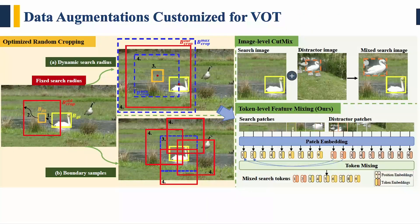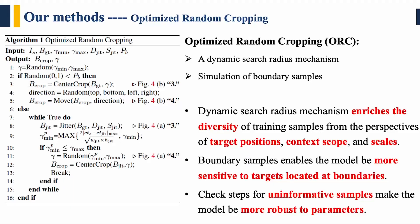In terms of the challenges and model characteristics of SOTA transformer trackers, we customized two data augmentations: an optimized random cropping (ORC) and a token-level feature mixing method (TF mix). Our optimized random cropping method contains a dynamic search radius mechanism and also simulates boundary samples. Due to the dynamic search radius mechanism, our ORC enriches the diversity of training samples from the perspectives of target positions, context, scope, and scale. Besides, boundary samples enable models to be more sensitive to targets located at boundaries.